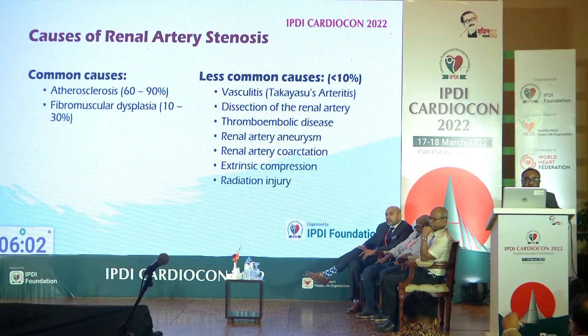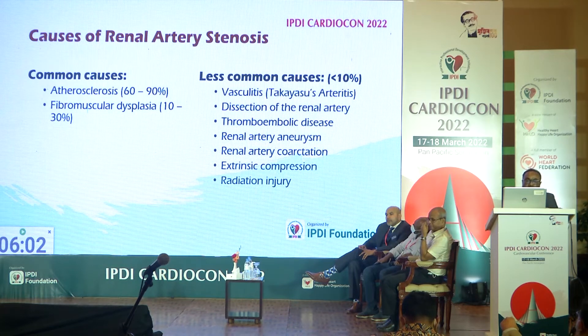The most common cause of renal artery stenosis is atherosclerotic, accounting for about 60 to 90% of cases. The next most common is fibromuscular dysplasia. Other less common causes include vasculitis, dissection of the renal artery, thromboembolic disease, and aneurysm.